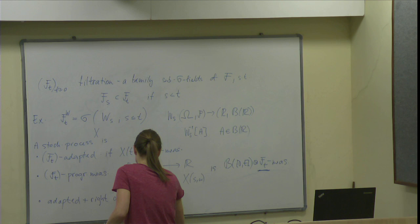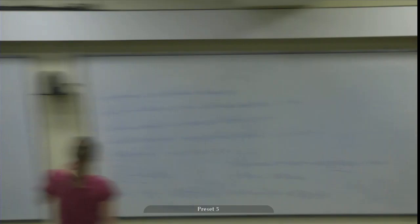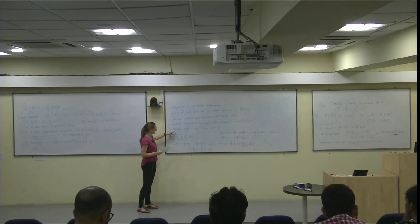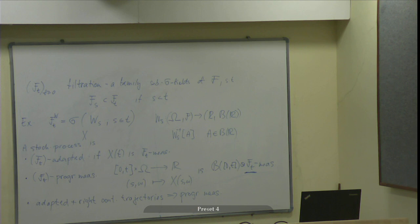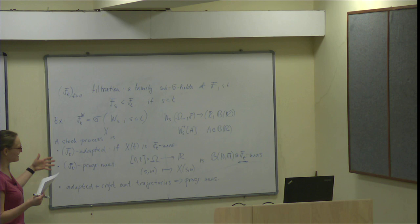This implies: adapted plus right-continuous trajectories implies progressively measurable. So in applications we never need fancy measure theory to prove progressive measurability. The integrand φ must be progressively measurable — this is the arrow of time condition. In practice, adaptedness will be easy to prove, and we will show some kind of time continuity, so we are good to go.